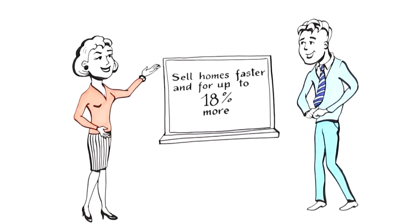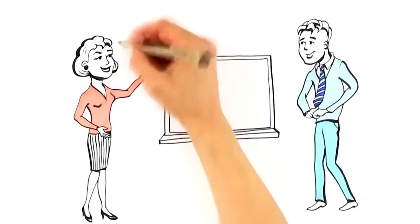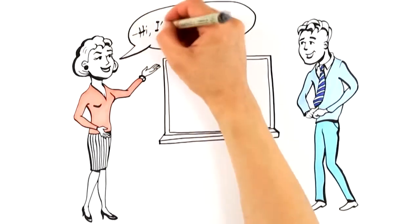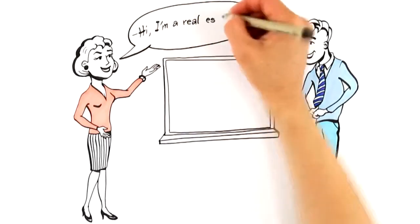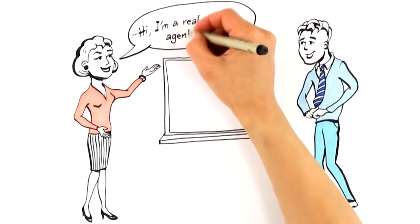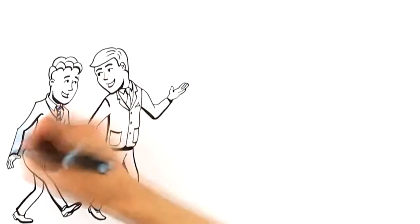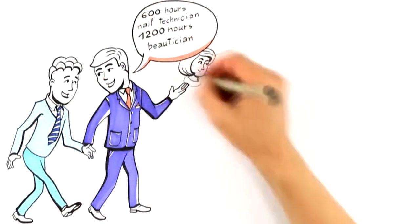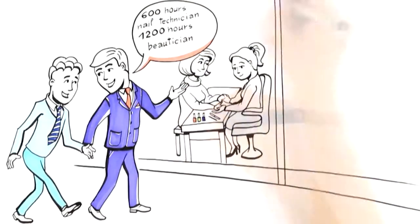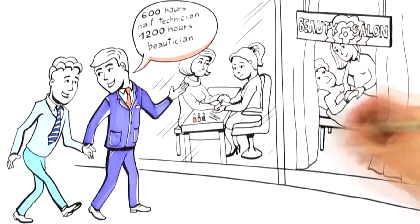As you probably know, finding an expert qualified to sell your home can be a daunting task. In most states, with just 45 hours of classroom time and a state exam, anyone can call themselves a real estate agent and they are legally allowed to direct the largest financial decision in your life. Compare this to other licensed occupations where it takes 600 hours to be a licensed nail technician or 1200 hours to be a licensed beautician. It's easy to see why traditional agents are poorly prepared to serve your needs.